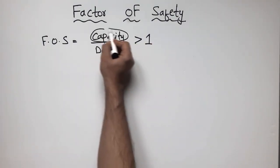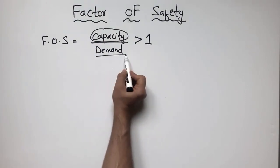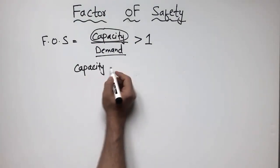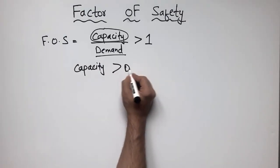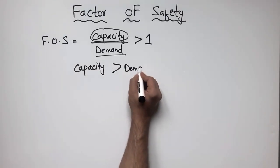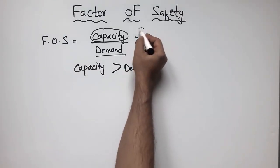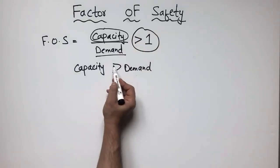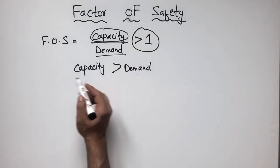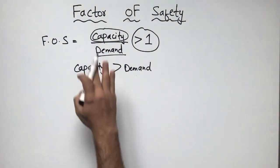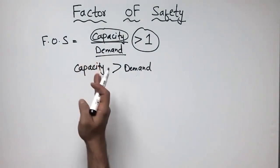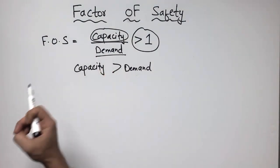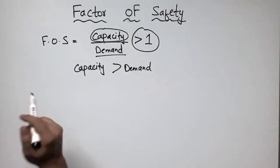The factor of safety being greater than one shows that the capacity of your structure or machine should always be greater than the demand. If your demand is greater than the capacity, it means the load acting on your structure or machine is more than what it can handle, and the structure will collapse.